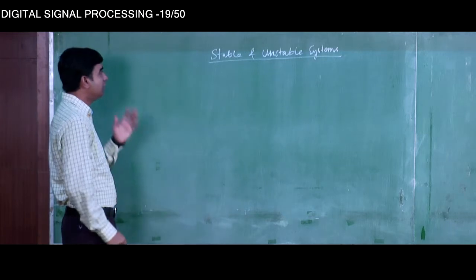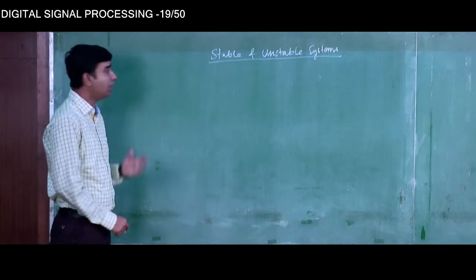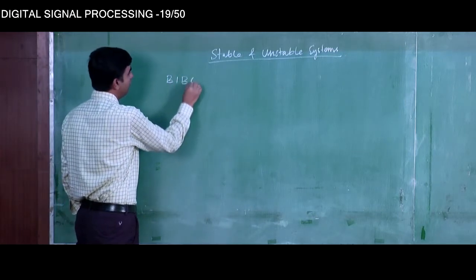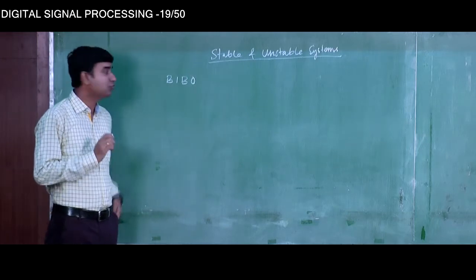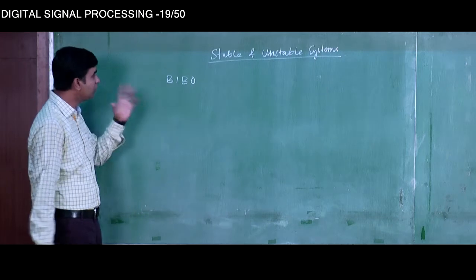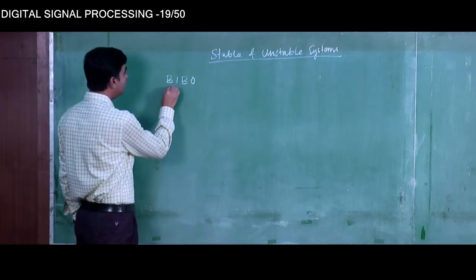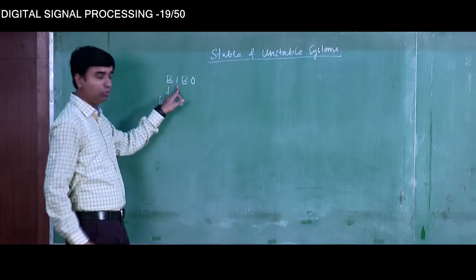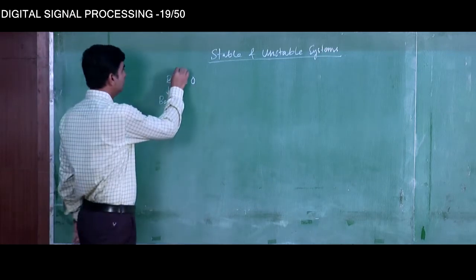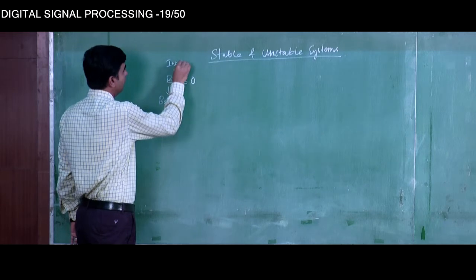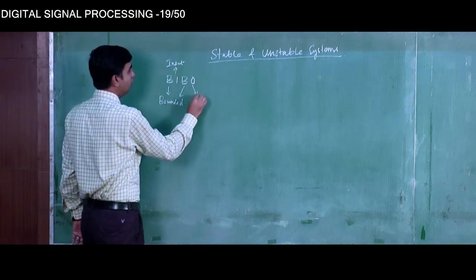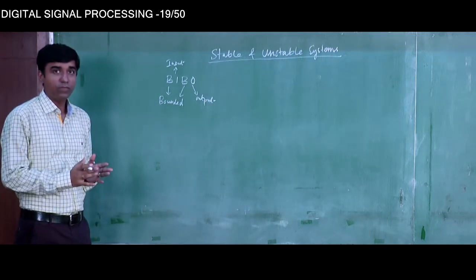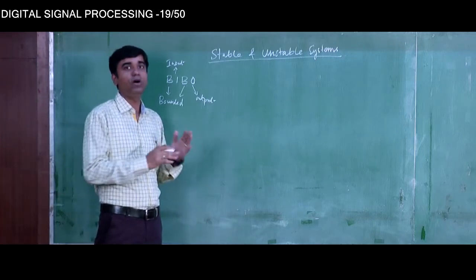What do we understand by a stable system? A stable system has to be BIBO stable. BIBO stability means Bounded Input, Bounded Output — B for bounded, I for input, B for bounded, O for output. So for a system to be stable, it has to be a bounded input, bounded output system.